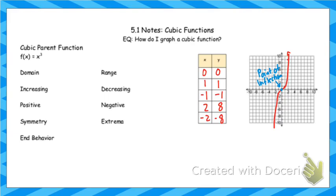That point is really like our vertex for quadratics in terms of graphing — it's that (0, 0) on the parent, and that's the point we're going to translate. We'll follow our pattern based off the point of inflection and treat it like a vertex, though it's not technically the vertex. Domain is negative infinity to infinity. Range is negative infinity to infinity. This graph is increasing — as we look left to right, the y values are getting larger on the entire function.